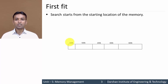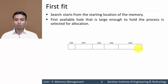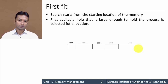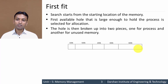This algorithm will start searching from the starting location of memory and move towards the end. Once the algorithm finds a partition that is large enough to hold the process, that partition is selected for allocation. Whenever a partition is selected for a process, that partition is divided into two parts: the first part allocated to the process and the second one that is unused memory, or a hole.